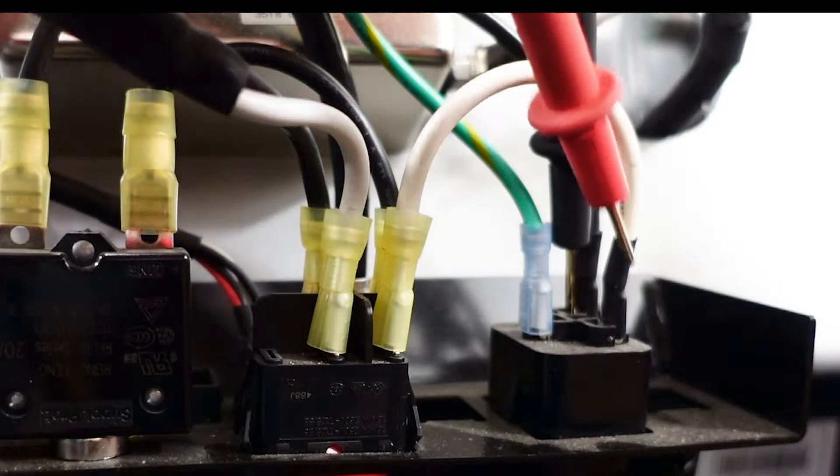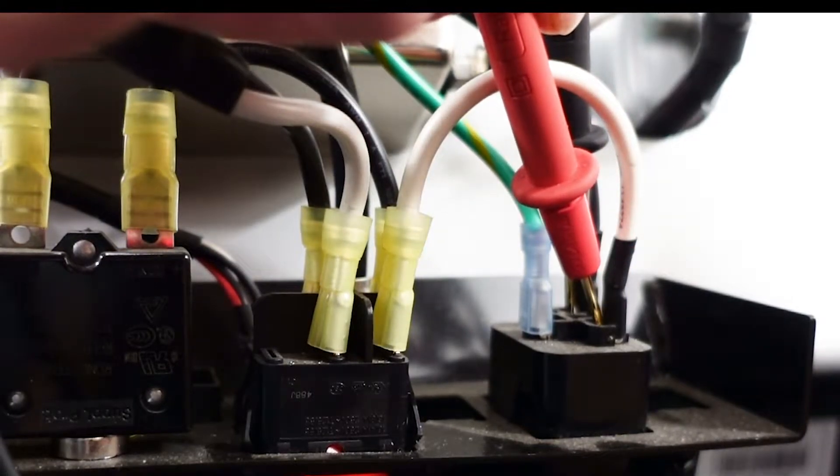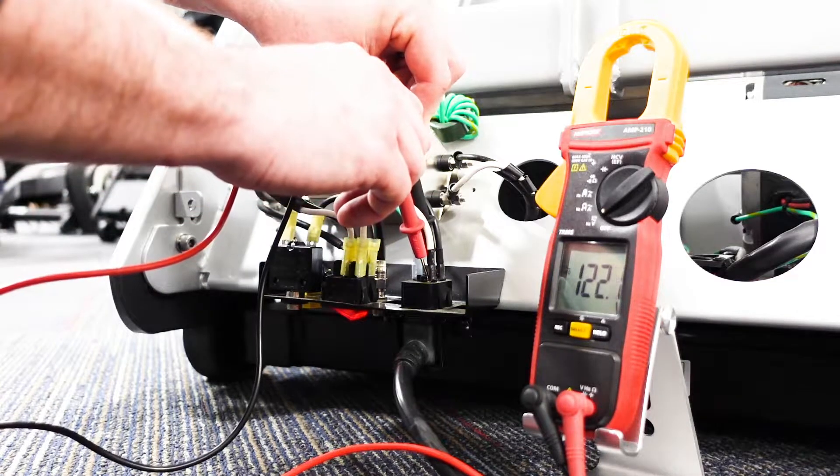Connect the black probe to the black wire and red probe to white wire. The meter will display the voltage.